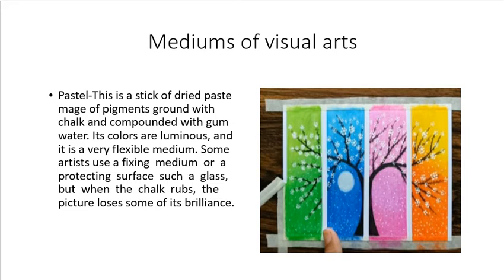Next is pastel. A pastel is a stick of dried paste made of pigments ground with chalk and compounded with gum water. Its colors are luminous and it is a very flexible medium. Some artists use a fixing medium or a protecting surface such as glass, but when the chalk rubs, the picture loses some of its brilliance. Pastel is often partnered with oil to balance the texture of color. Glass and plastic covers are used to protect it from harm and avoid erosion.